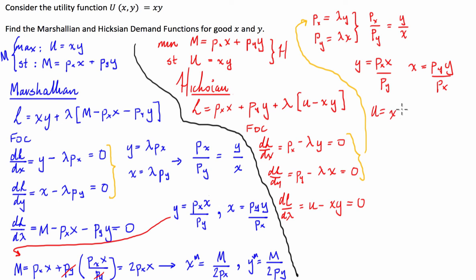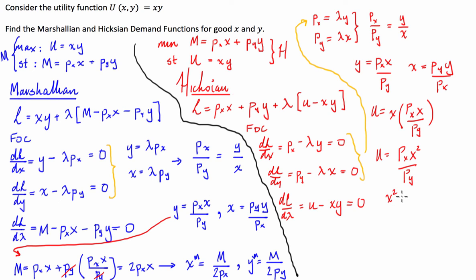Substituting into the utility constraint: U equals X times (PX·X / PY). Multiplying out gives U equals PX·X² / PY. Rearranging, X² equals U·PY / PX. Therefore X equals the square root of (U·PY / PX). This is our Hicksian demand for X.